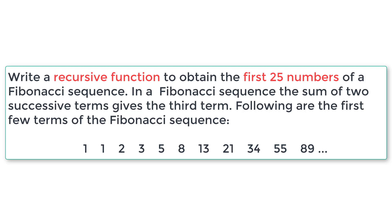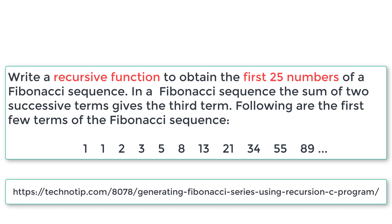We have a problem statement here. Let us read it. Write a recursive function to obtain the first 25 numbers of a Fibonacci sequence. In a Fibonacci sequence, the sum of two successive terms gives the third term. The following are the first few terms of the Fibonacci series. To get the exact solution for this problem statement, please visit the link on your screen — we have source code written exactly matching this problem statement.